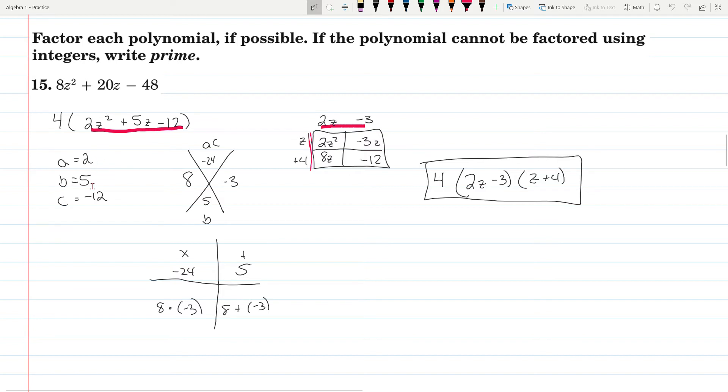So your A is 2, your B is 5, your C is negative 12. You're looking for a product of negative 24 that adds up to 5. That's 8 times negative 3. In the Xbox, we have 2z squared and negative 12. Then we have 8z and negative 3z. Factor: 2z, negative 3, z, positive 4. So that's 2z minus 3 times z plus 4. But don't forget about that original 4. So it's 4 times 2z minus 3 times z plus 4.